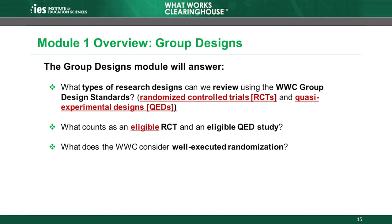The first module of the training focuses on the type of research designs that we can review using the WWC Group Design Standards, namely Randomized Control Trials and Quasi-Experimental Designs. The module discusses what counts as an eligible randomized control trial, including what the WWC considers well-executed randomization, and what counts as an eligible quasi-experimental design study.